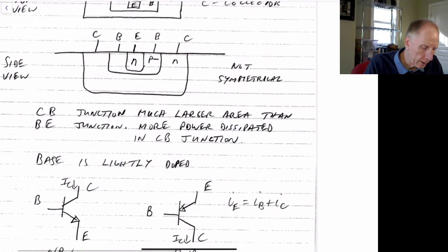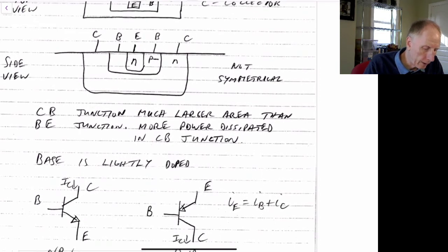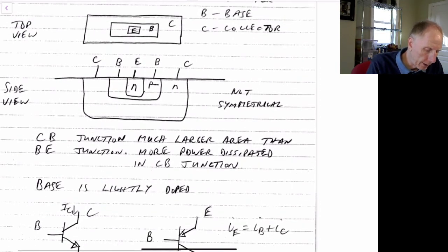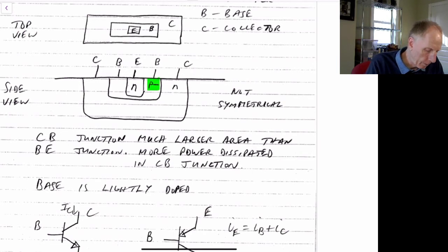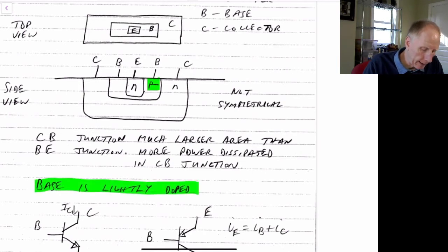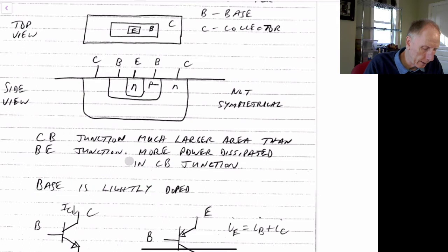One more point: the base is not just P-type, it's P-minus. The base has to be lightly doped in order for the device to operate properly as an NPN transistor.